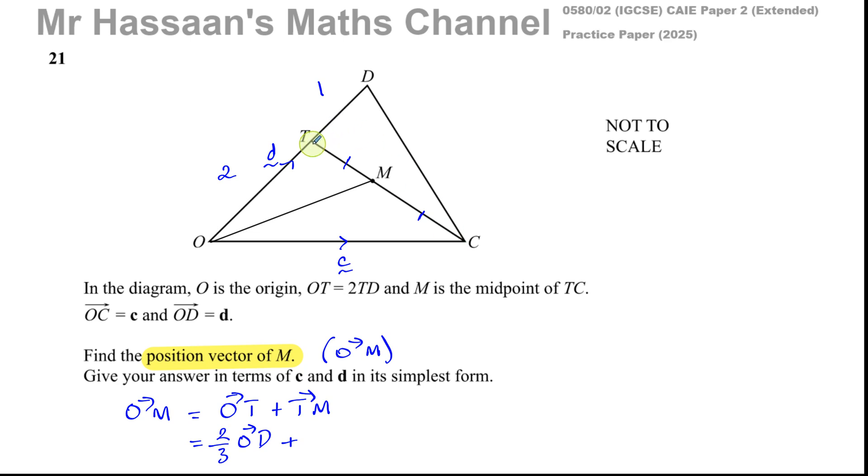I can even go the other way around, T to D and then from D to C. But T to C, I can find quite easily. So T to M is a half of T to C, half of T to C.